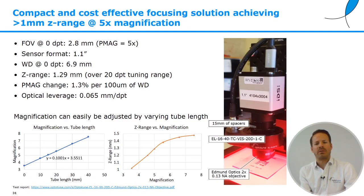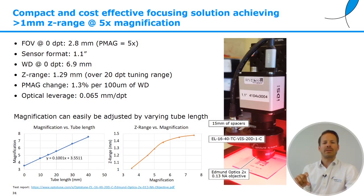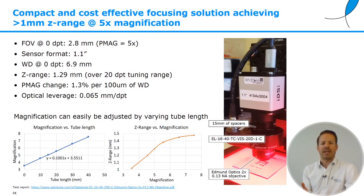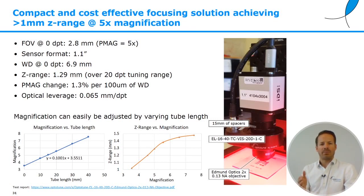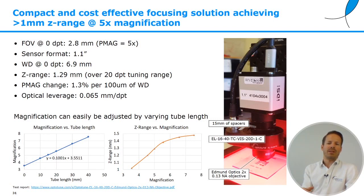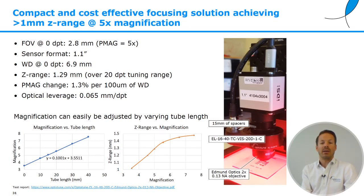Another versatile solution: Edmund Optics has ultra-compact objective lenses where you choose tubes of different lengths behind the objective to achieve different magnifications. The example shown is 5x magnification — after the objective lens, you have an EL16-40 in the 20-diopter version, then 15mm of spacers, resulting in 5x magnification with a Z range of roughly 1.3mm, very low magnification change. As you can choose the tube length, this is a simple-to-configure system to achieve exactly the magnification you need. Image circle is quite big, easily fitting a 1.1-inch sensor.